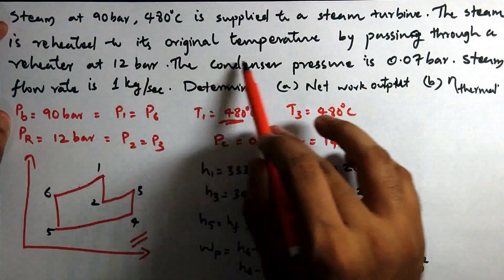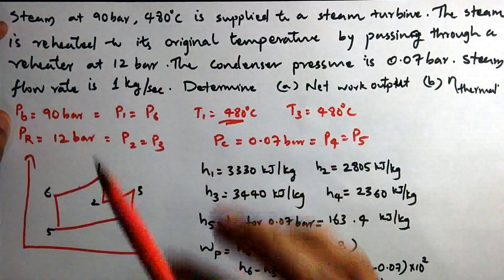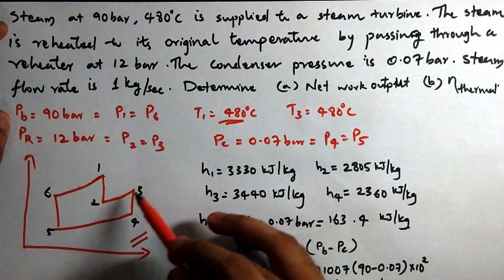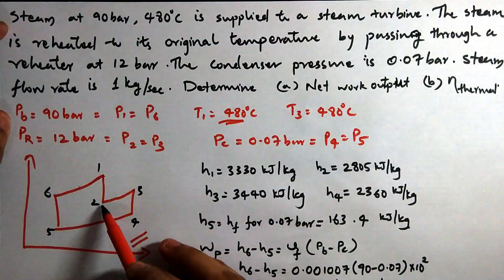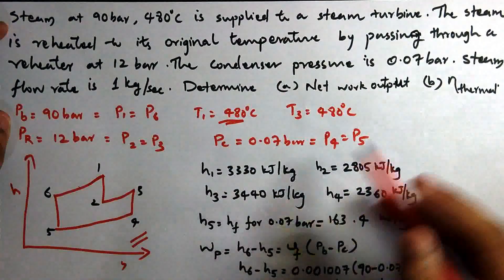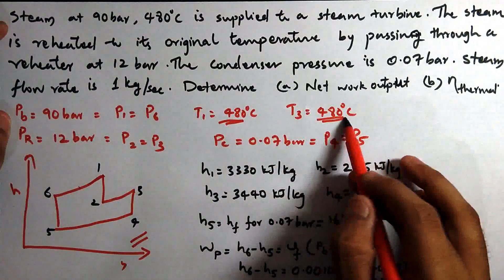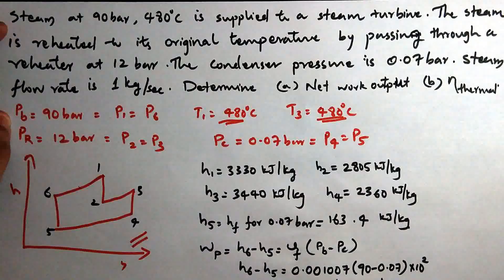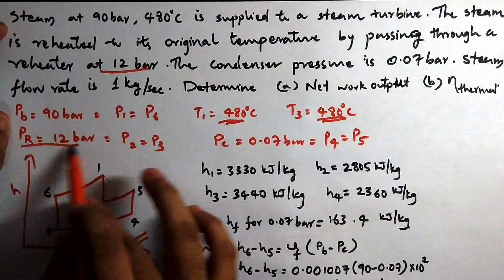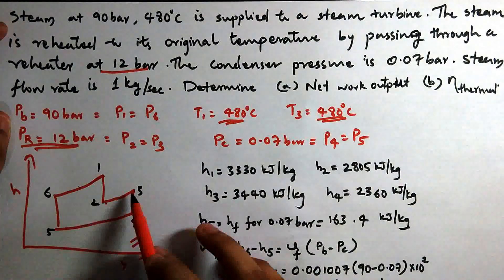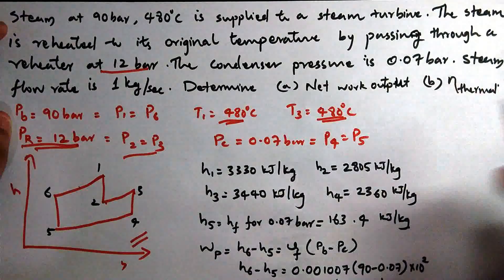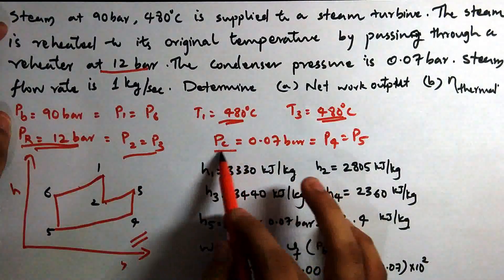The steam is reheated to its original temperature by passing through a reheater at 12 bar. So the reheat pressure is 12 bar, and the reheat temperature T3 equals 480 degrees Celsius — the same as the original inlet temperature. The condenser pressure is 0.07 bar, so PC equals P4 equals P5 equals 0.07 bar.